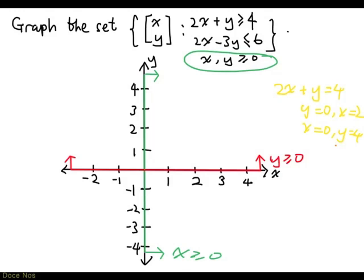So immediately we know that the line defined by 2x plus y equal to 4 has to go through the two points (2, 0) and (0, 4). So 2, 0 is right here and 0, 4 is right there. So we just need to draw a line through these two points.